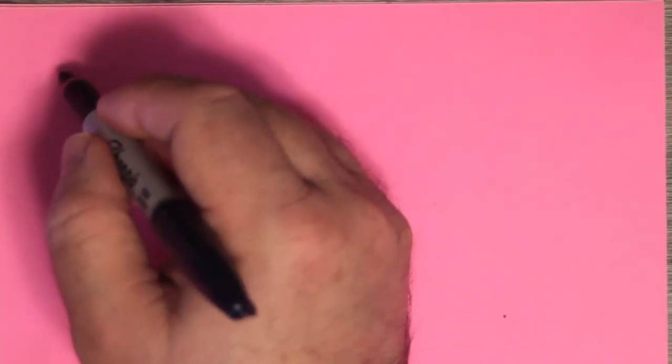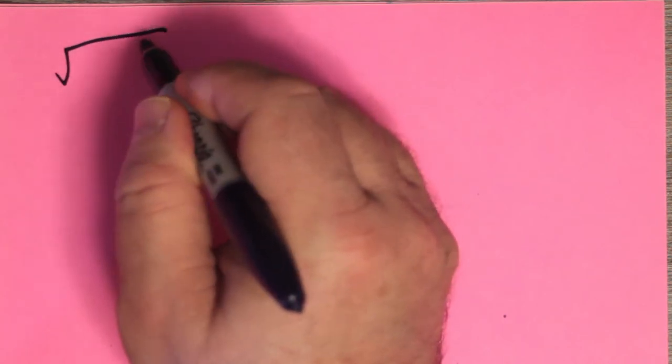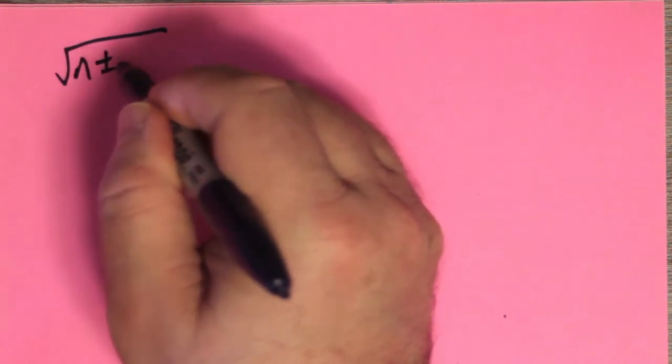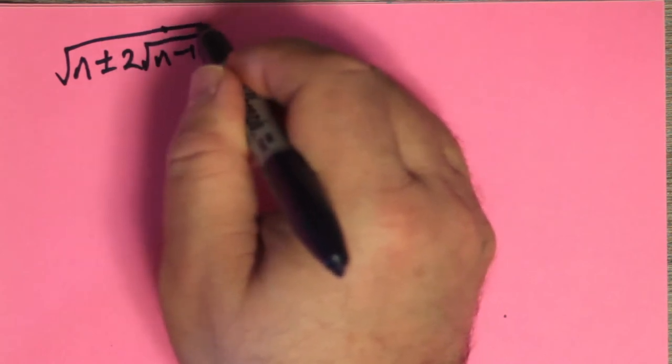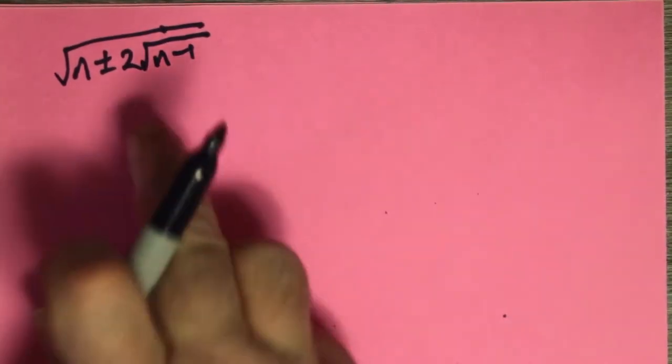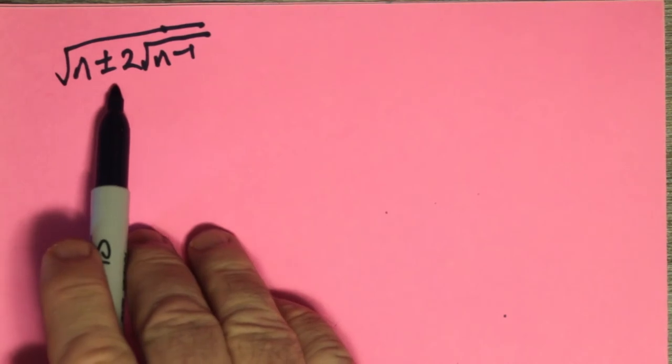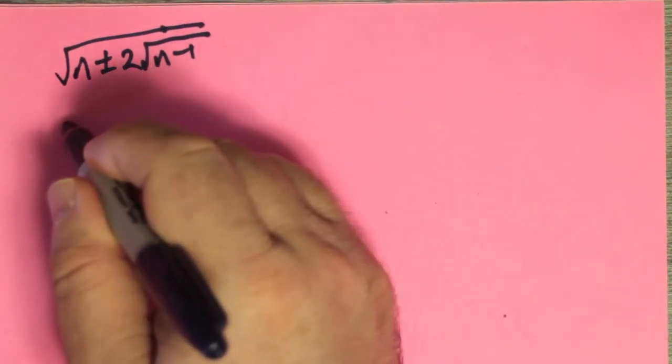So the general idea for these problems is that they're problems of the form the square root of n plus or minus 2 root n minus 1. That's really all of these problems seem to have this form. Let's see if we can simplify this in the general case.